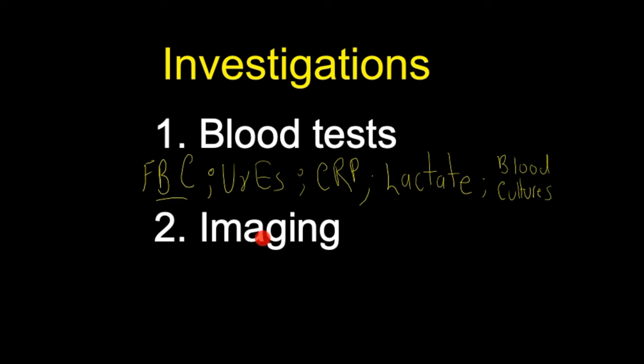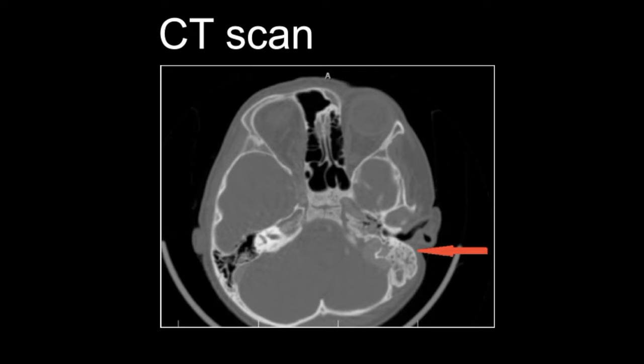The choice of imaging in mastoiditis is a CT scan. Indications include a persistent high fever despite 48 hours of medical management with IV antibiotics, or any suspicion of complicated acute mastoiditis. It can show soft tissue or intracranial complications. Typical CT findings include partial to complete opacification of mastoid air cells. This CT scan shows acute left mastoiditis with fluid accumulation, peripheral contrast enhancement, and restricted diffusion in the left mastoid, as indicated by the red arrow.